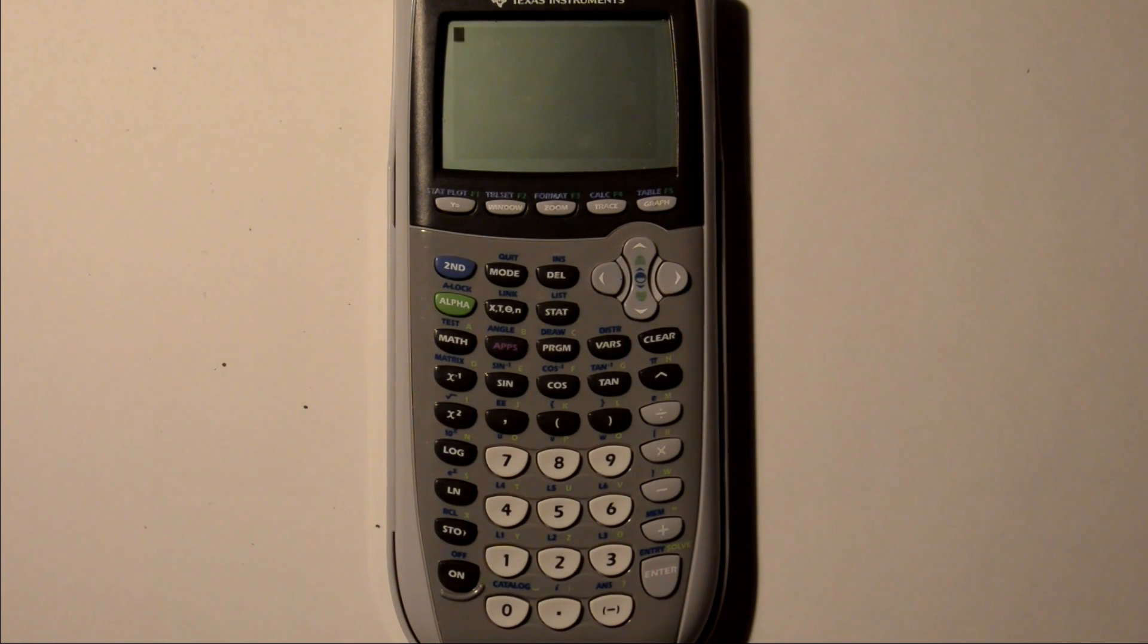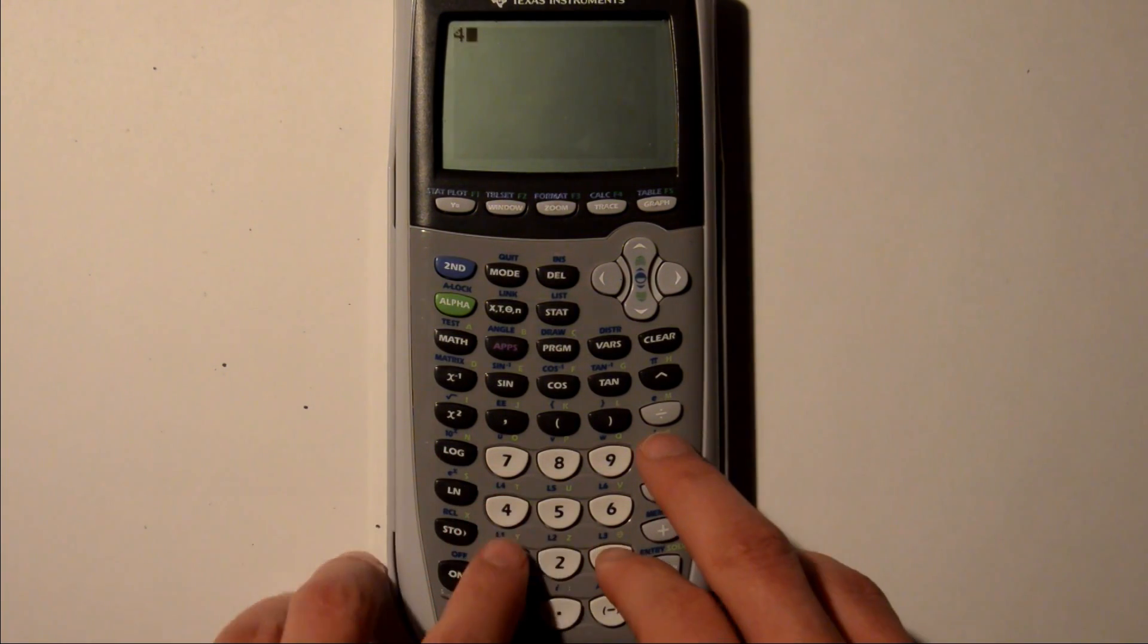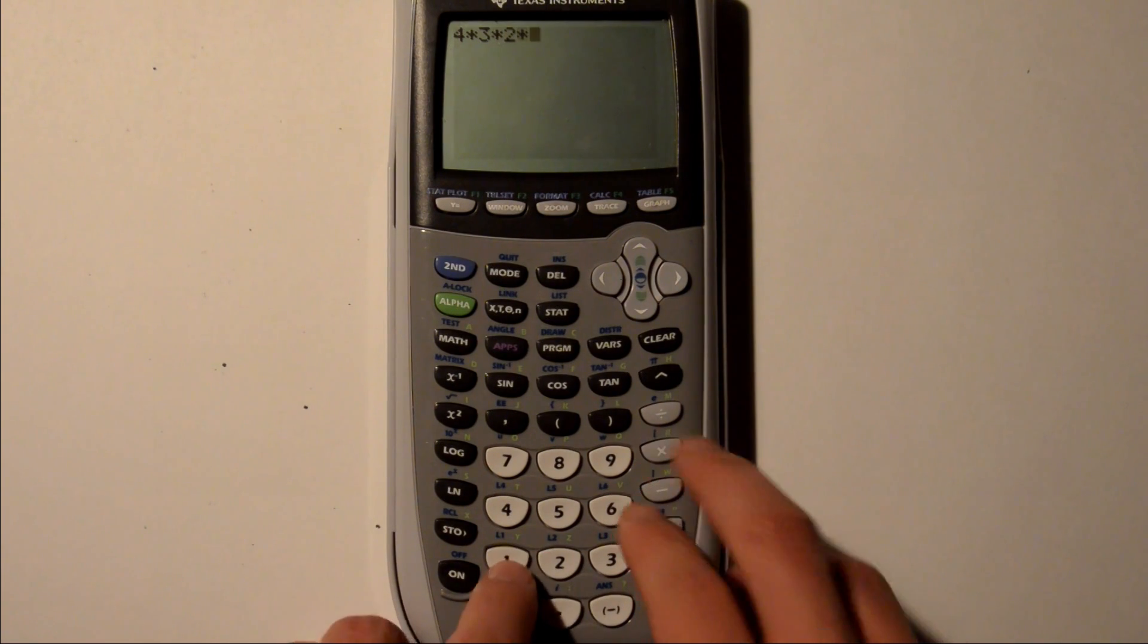Doing factorials for smaller numbers isn't that bad. For example, if you had to do 4 factorial, you could just multiply by typing 4 times 3 times 2 times 1.